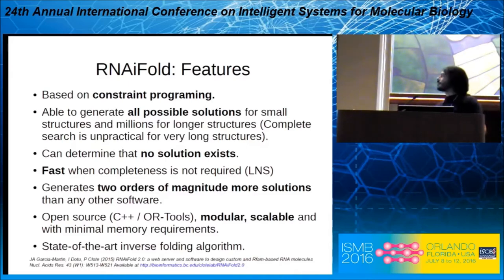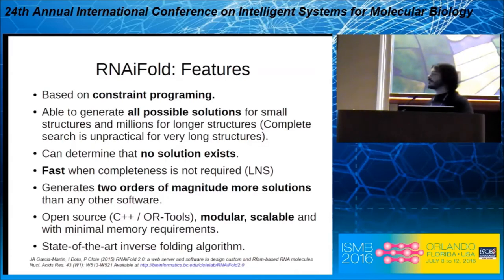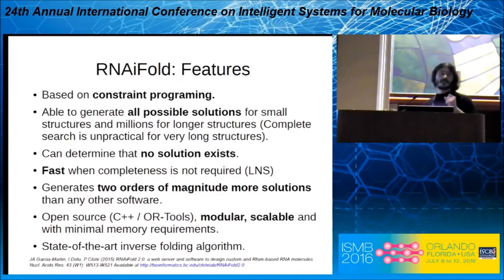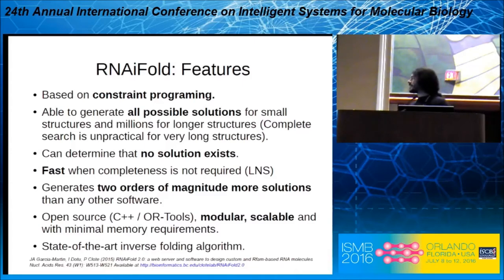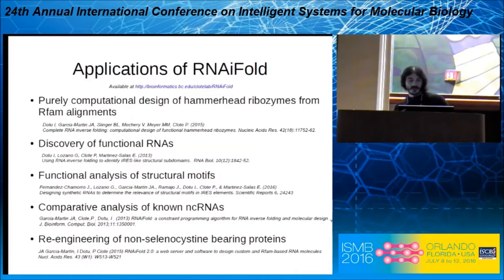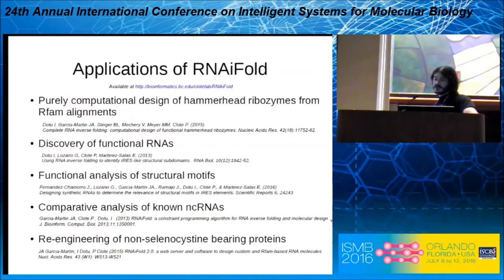The exhaustive search is impractical for very long structures, but it can also determine that no solution exists. On the other hand, if we want a fast algorithm, we can use a large neighborhood search variation where we find a solution very fast. It generates two orders of magnitude more solutions than any other software, making it ideal for our type of design — open source and scalable, making it probably the state-of-the-art inverse folding approach.